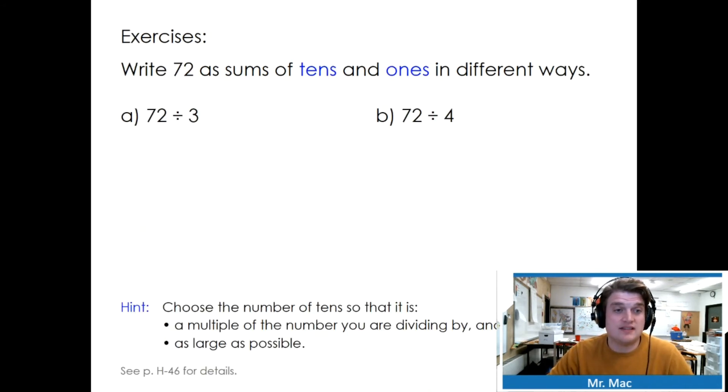Write 72 as sums of tens and ones in different ways. So 72 divided by 3, it could be 70 plus 2, but we know we can't share 2 with 3. Let's try 60 plus 12. Can 12 be shared with 3? 3, 6, 9, 12. Can 60 be shared with 3? Yeah, we already figured that out. It was 20 plus 4. Try the next one. The hint's very helpful: choose the number of tens so that it's a multiple of the number that you're dividing by and as large as possible. I chose a multiple of 10 that's quite close to 72.